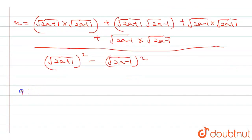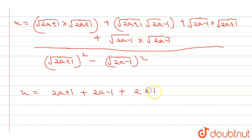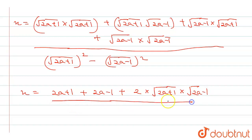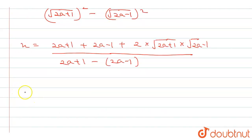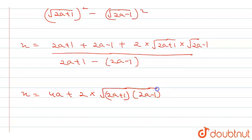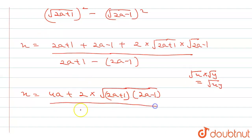Now we can write x equals (2a+1) + 2√((2a+1)(2a-1)) + (2a-1) in the numerator. The denominator simplifies as (2a+1) minus (2a-1), where the 2a terms cancel, giving us 2. So 2x equals 4a plus 2√(4a²-1).